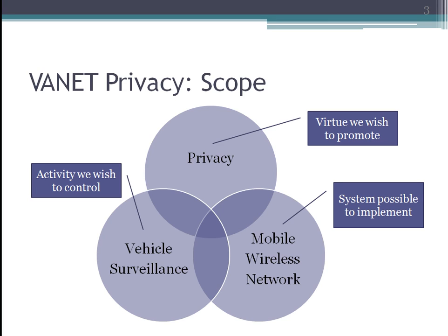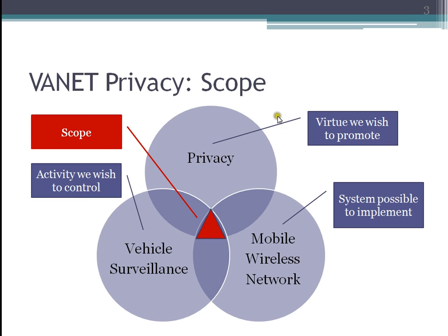The space we're working in, in terms of VANET privacy, is in the region that overlaps the concept of privacy, the concept of vehicle surveillance, and the concept of mobile wireless networks. Basically, we want to be able to preserve our privacy while we're driving our cars, even though there's mobile wireless network equipment on board.